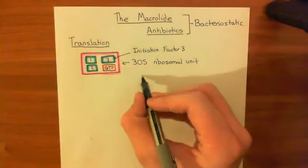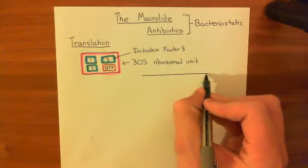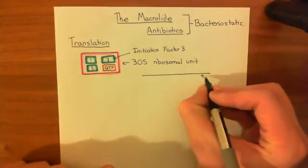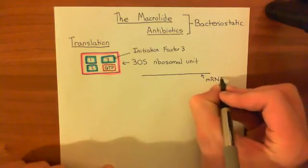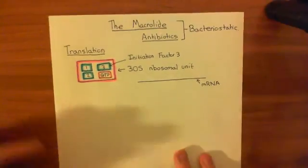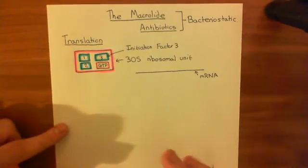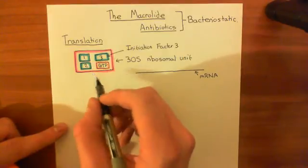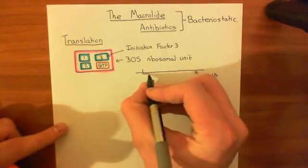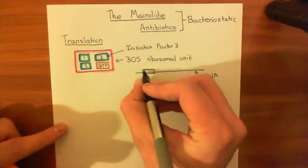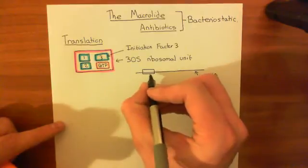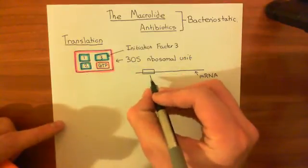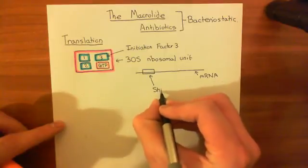Now, let's bring along our piece of mRNA which is to be translated. In bacteria, what you have is a certain combination of organic bases which is capable of binding to the 30S ribosomal subunit, and this combination is known as the Shine-Dalgarno sequence.